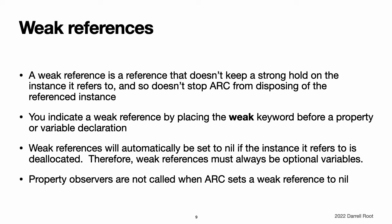Weak references. A weak reference is a reference that does not keep a strong hold on the instance it refers to, and so does not stop ARC from disposing of the referenced instance. This behavior prevents that reference from becoming part of a strong reference cycle. You indicate a weak reference by placing the weak keyword before a property or variable declaration. Because a weak reference does not keep a strong hold on the instance it refers to, it is possible for that instance to be deallocated while the weak reference is still referring to it. Therefore, ARC automatically sets a weak reference to nil when the instance that it refers to is deallocated. Note, property observers are not called when ARC sets a weak reference to nil.